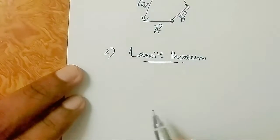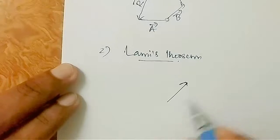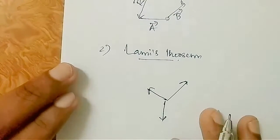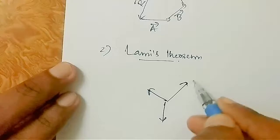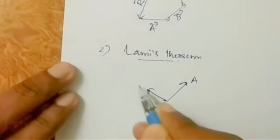In Lamy's theorem, we have three vectors. If these three vectors are in equilibrium and add to zero, we have three vectors: A, B, and C.